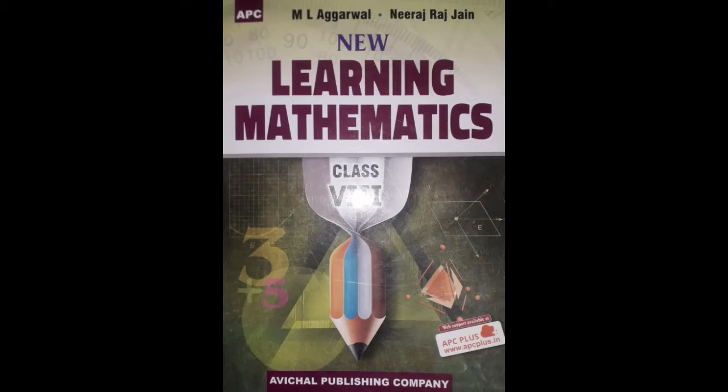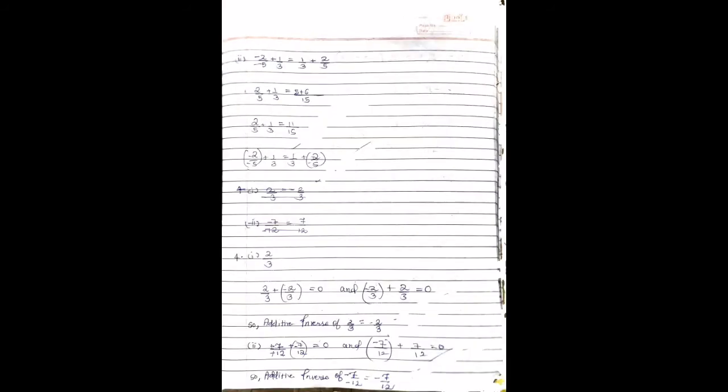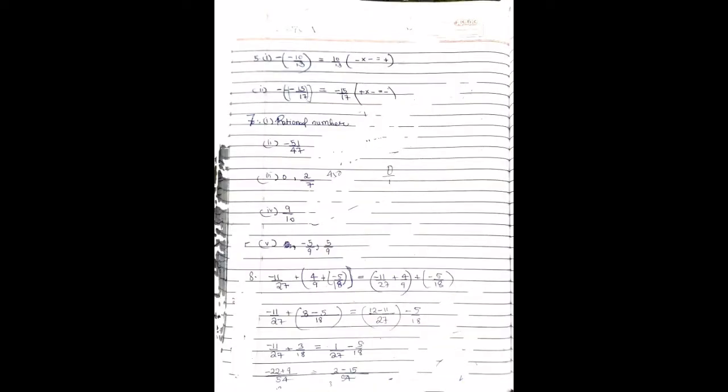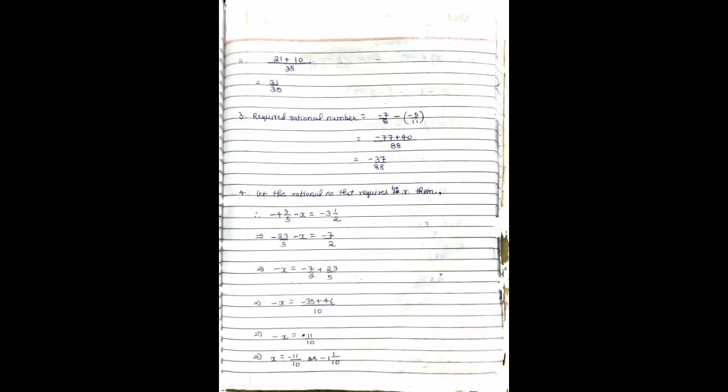Today we have the solution of New Learning Mathematics Class 8. Today we have the solution of Chapter 1, Rational Numbers, from A to Z, from Exercise 1.1 to Exercise 1.6. There is full and correct solution of these exercises and each question is mentioned here. If you want the PDF of the solution, then you can go to the description and click on the link provided in the description to get the PDF.